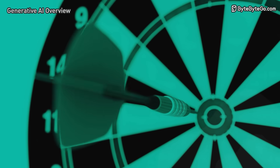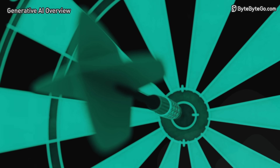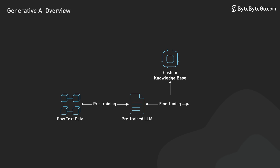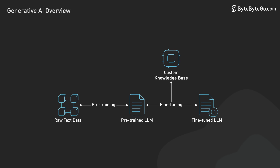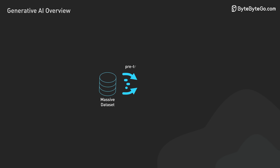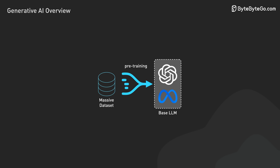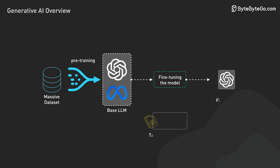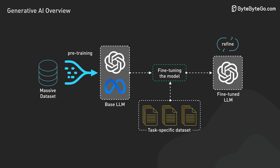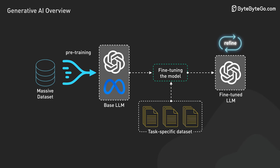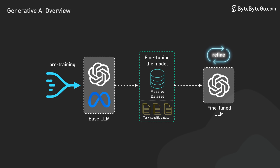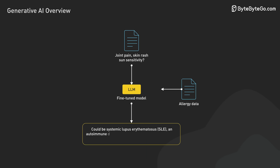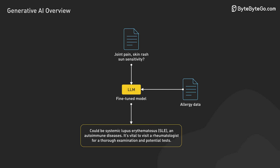Fine-tuning adapts a pre-trained AI model to your specific needs, improving its performance on domain-specific tasks. We start with a foundation model like GPT or LLaMA, which has broad knowledge from training on vast amounts of general data. Fine-tuning then tailors this model to your specific domain or task dataset. We test the model's performance using a validation set and refine the process as needed. The result is a model that combines broad knowledge with expertise in your domain, truly making AI your own.